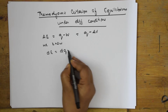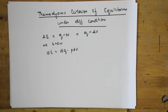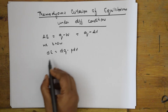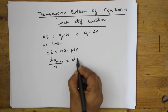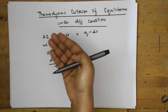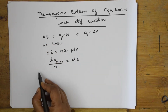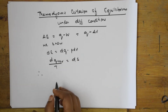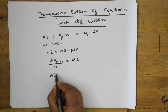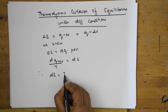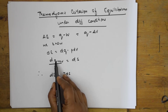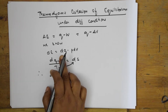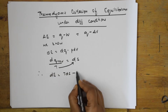We know from the first law: DE is equal to DQ minus PDV. We have also learnt under entropy that DQ reversible divided by T is equal to DS. So I am going to relate these. Since DQ equals TDS, I can substitute: DE is equal to TDS minus PDV. Let us take this as the first relation.